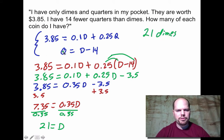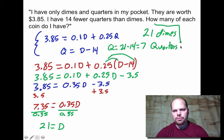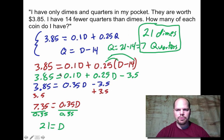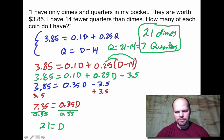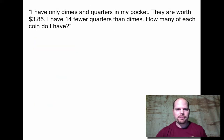Since d = 21, the number of quarters is 21 - 14 = 7. So we have 21 dimes and 7 quarters. Checking: 21 - 7 = 14, so there are 14 fewer quarters ✓. Value: $2.10 + $1.75 = $3.85 ✓. Always check your solution on these types of problems.